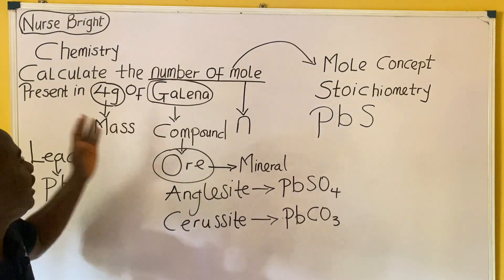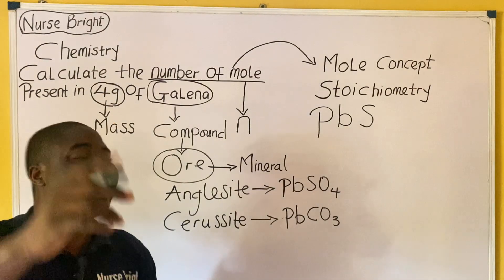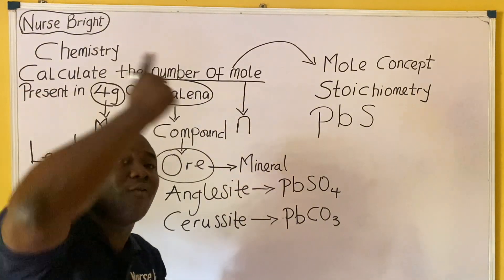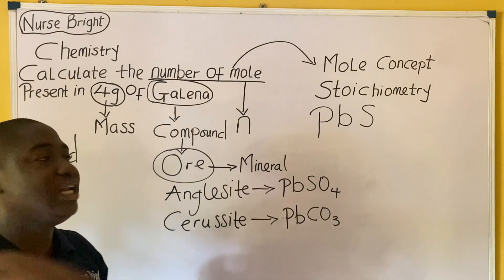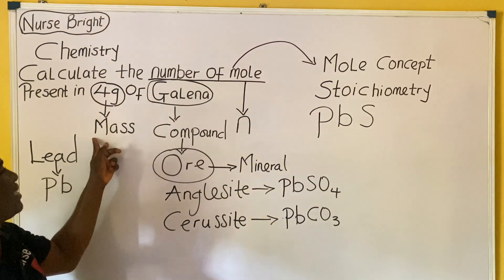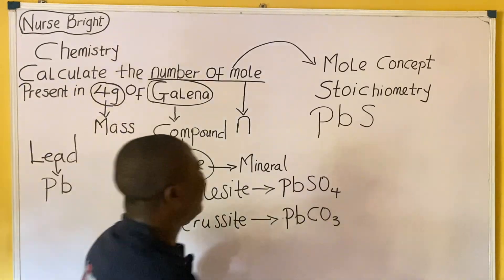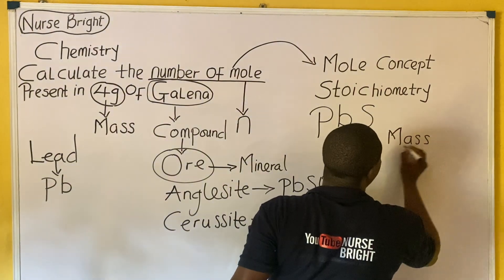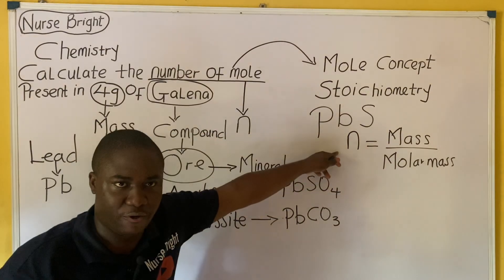All these things are not hard. In the course of this question, they're asking us to calculate the number of moles present in 4 grams of galena. Which formula should we use? The formula that relates number of moles to mass is: number of moles equals mass divided by molar mass. This is the formula for number of moles that has mass in it.